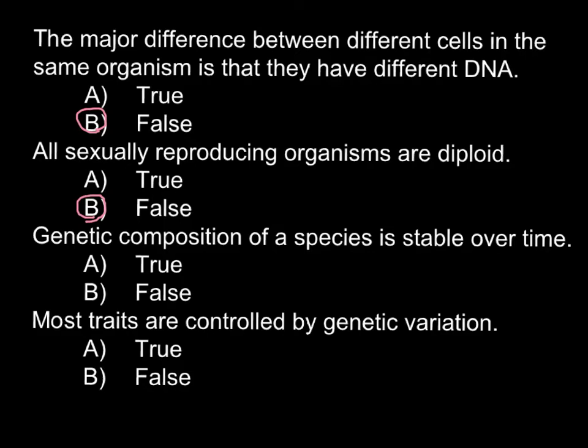These plants are seedless because they are triploid. So, another question: is the genetic composition of a species stable over time? Genetic composition is stable — this is what makes us different species — but over time we definitely develop and there are some changes.